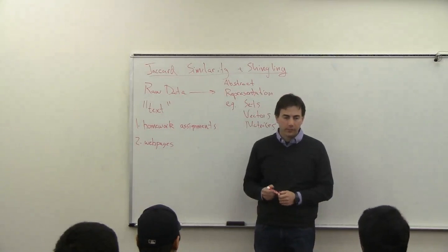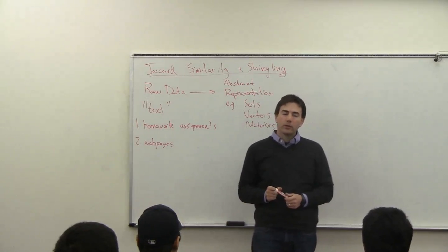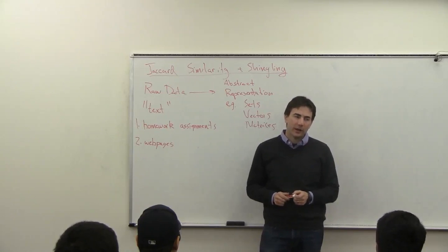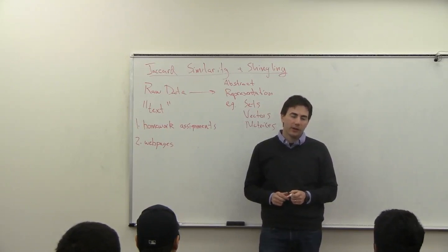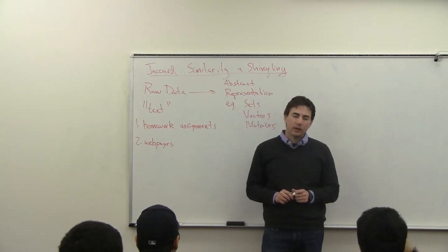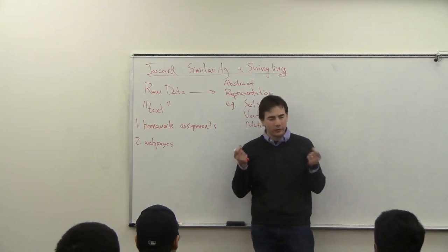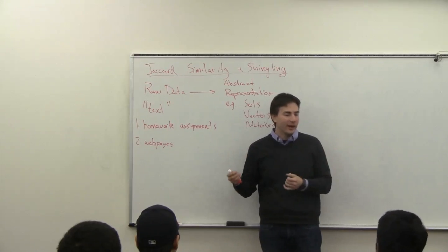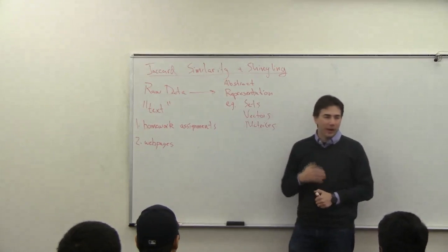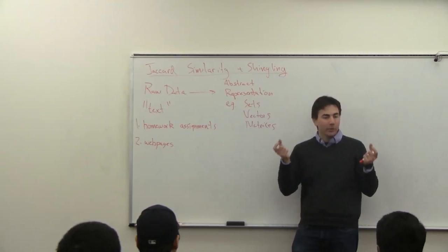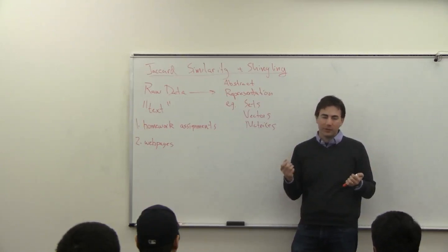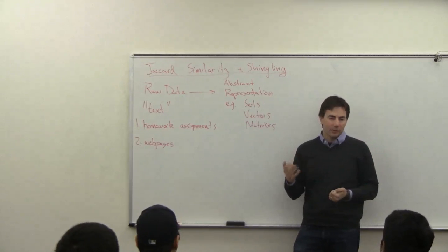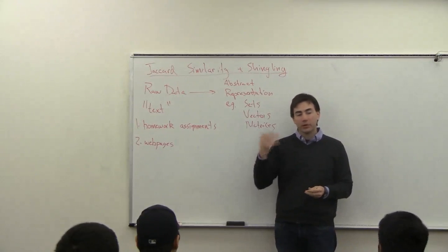A student asks: don't search engines look at incoming and outgoing links to rank pages? That's the PageRank algorithm — it tells you how important a webpage is. But that's different from detecting duplicates. You could have two pages that both look very important but are really telling you the same thing — duplicates. For example, about.com and recipes.com might both provide the same basic recipe, and there's no point displaying both in your search results.